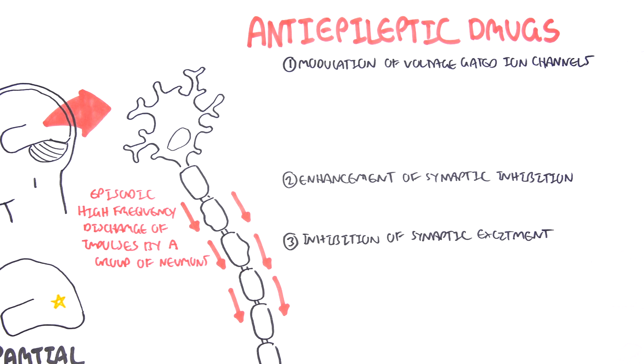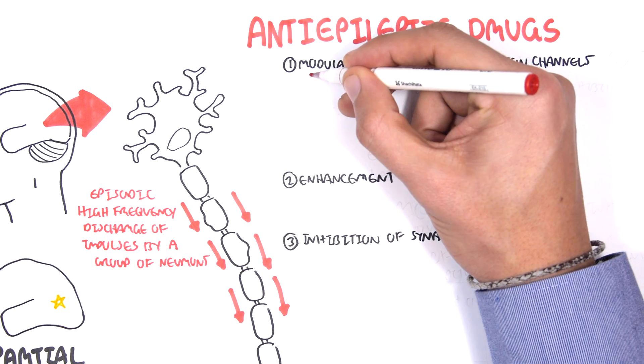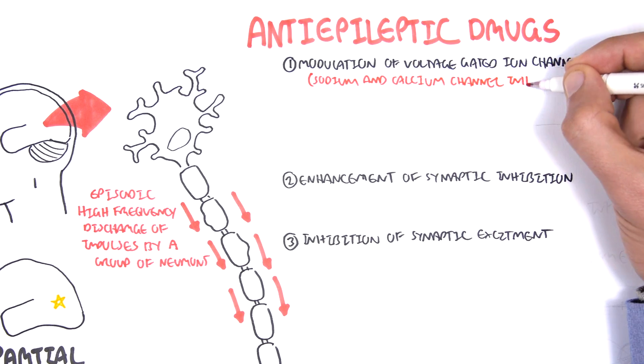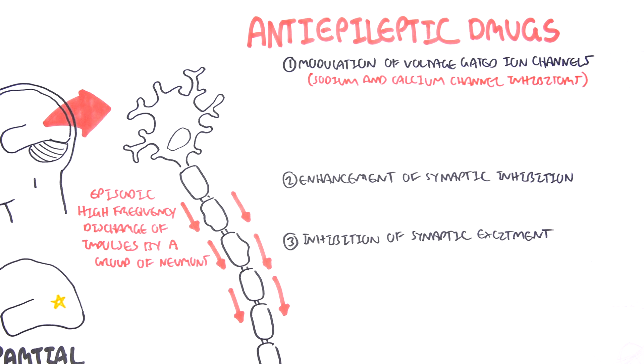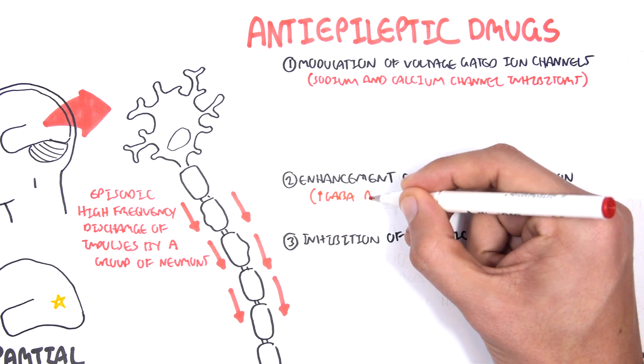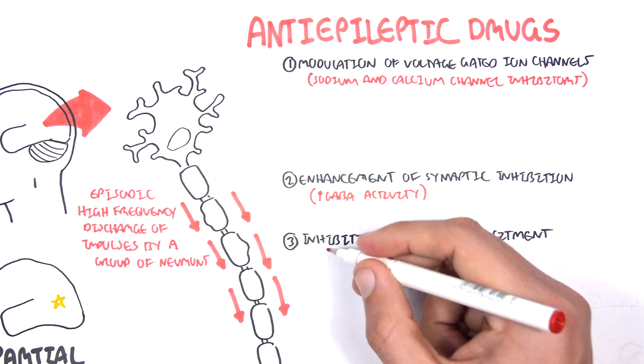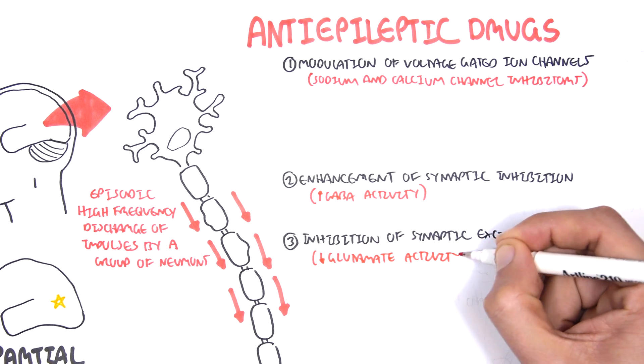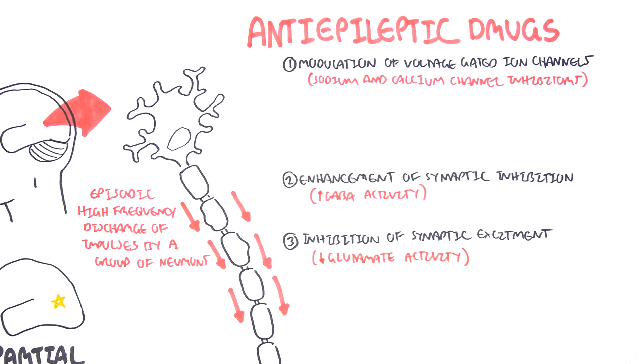Drugs that modulate voltage-gated ion channels target the sodium and calcium channels and inhibit them. Drugs that enhance synaptic inhibition increase GABA activity, which is the inhibitory neurotransmitter in the CNS. Drugs that inhibit synaptic excitement essentially decrease glutamate activity.